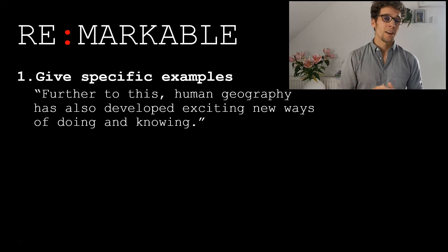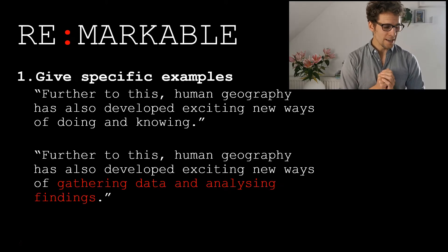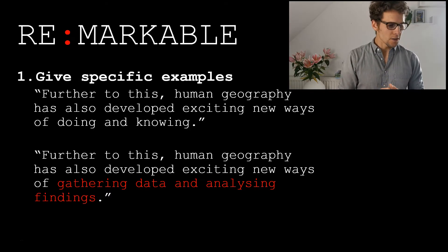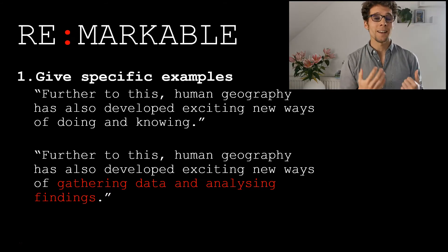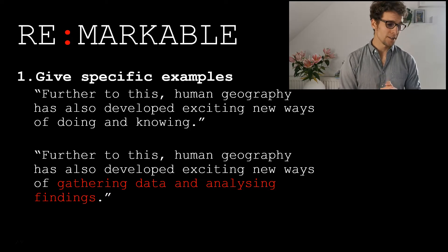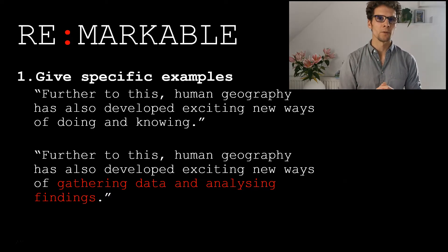It doesn't really mean anything — it was me trying to sound a bit smart. To rewrite that, we could obviously specify what those 'doing and knowing' things are. Here I've gone for 'gathering data and analysing findings,' which is also still quite vague. There's an argument for making it more specific — saying what sorts of data and what methods of analysis. That's a judgement call about what your marker expects. But here I have improved the clarity of the sentence by defining what I mean, turning those vague concepts into real, tangible, understandable things.